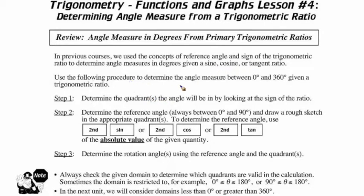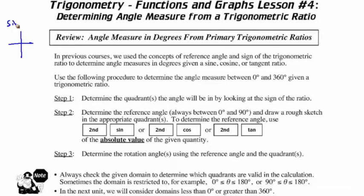We'll use the following procedure to determine the angle measure between 0 and 360 degrees given the value of a trig ratio. Step one: we'll determine which quadrants the angle will be in by looking at the sign of the ratio. For example, if we're given that the value of some sine of an angle is equal to a positive value, then we know that we're going to be in quadrant one or quadrant two.